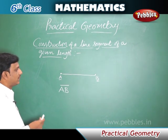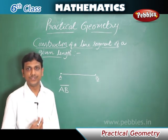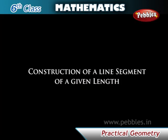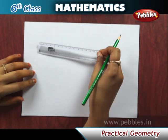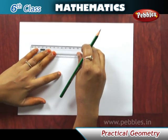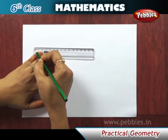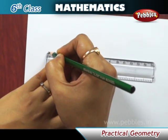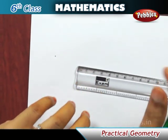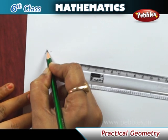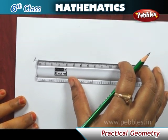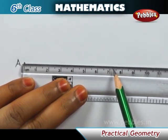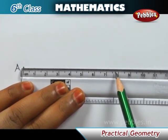Now let us see how to construct a line segment using geometrical instruments. Method 1: Using a ruler. Suppose we want to draw a line segment of 7.8 centimeters. First, place the ruler on paper and hold it firmly. Mark a point with a sharp-edged pencil against the 0 centimeter mark of the ruler, and name it A. Mark another point against the eight small divisions just after the 7 centimeter mark.